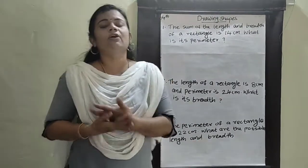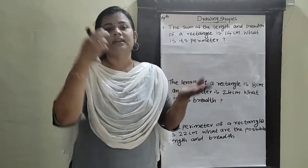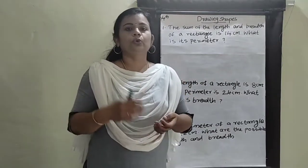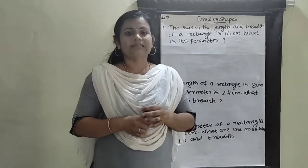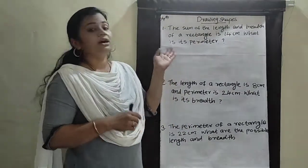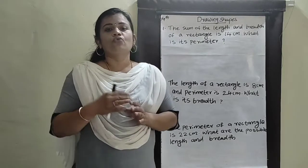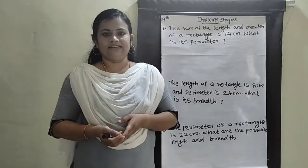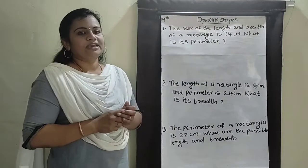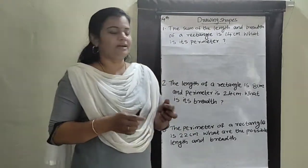In the last class we already discussed the perimeter of a rectangle. Perimeter of a rectangle is equal to 2 into length plus breadth. Then perimeter of a square is equal to 4 into 1 side. Do you remember that? Ok children, let us discuss some problems here.